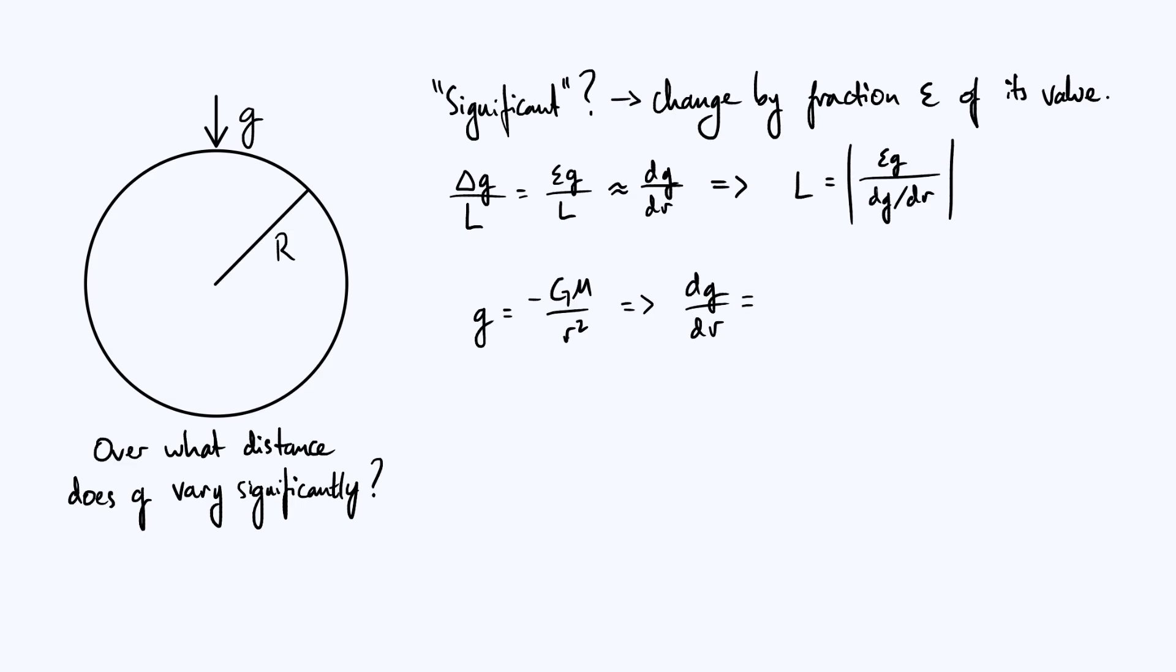You're going to pull down a minus two because this is r to the minus two really, and so you're going to get 2GM over r cubed for your derivative. So let's plug all of that into our expression for L up at the top there.